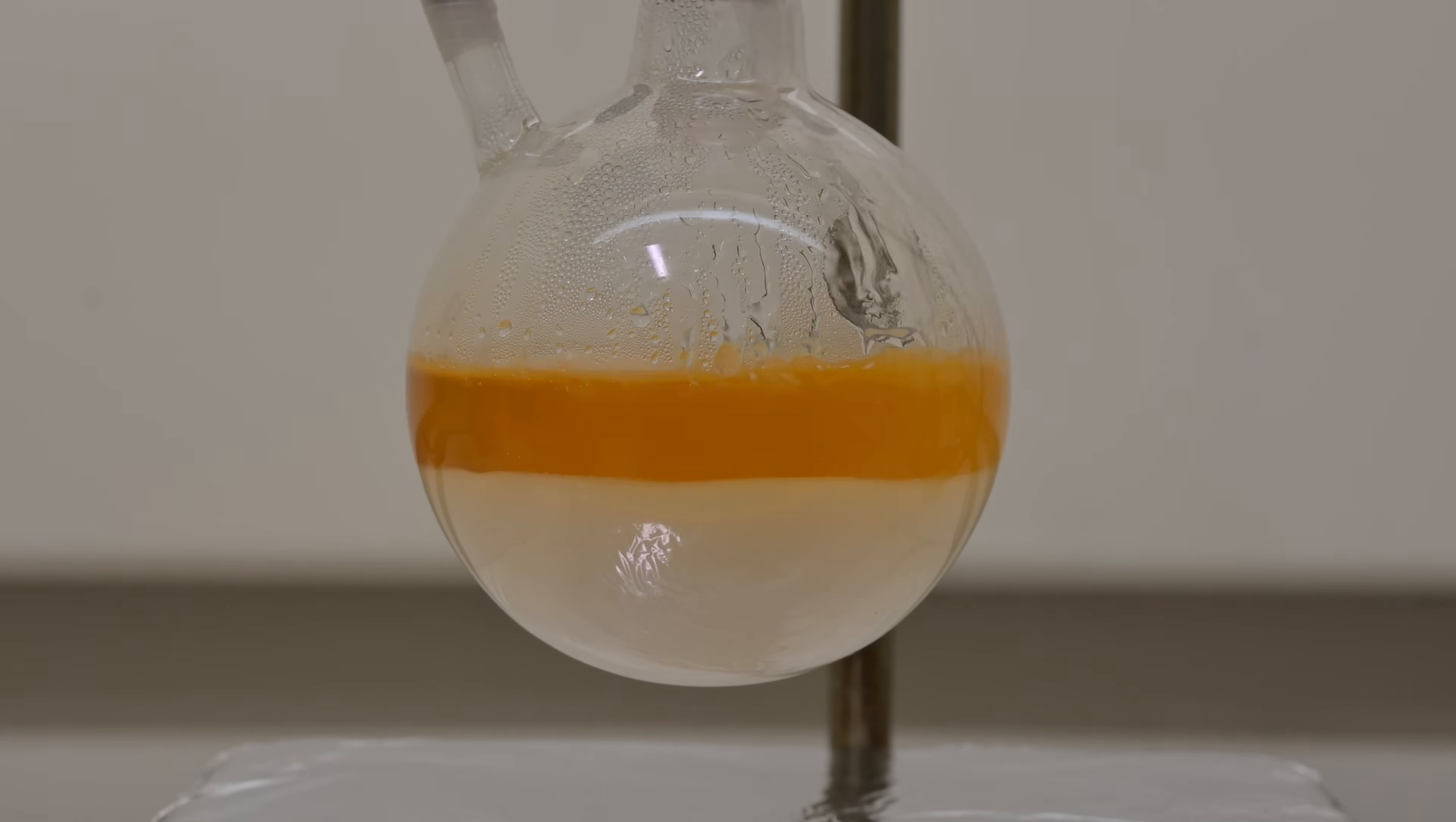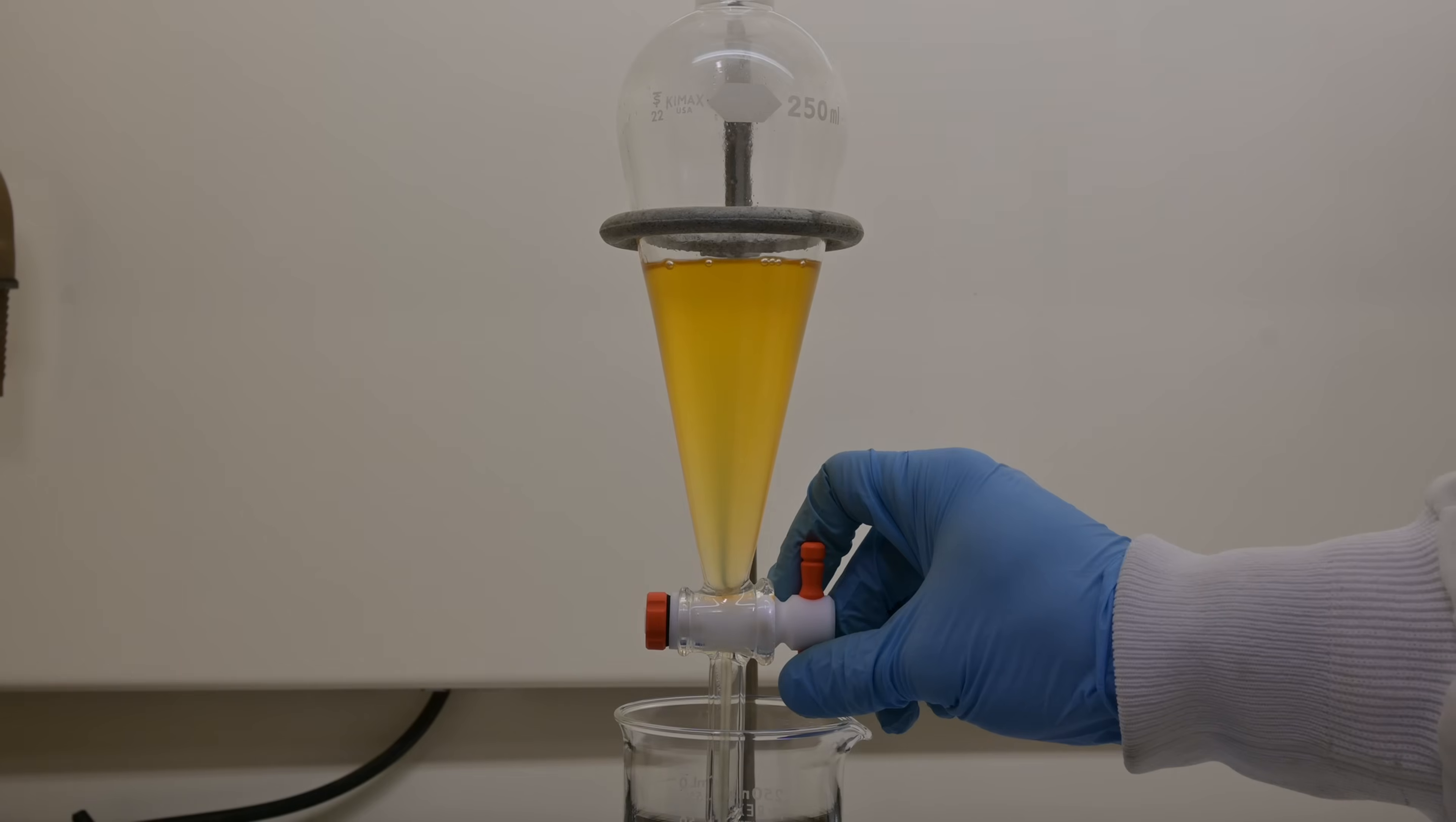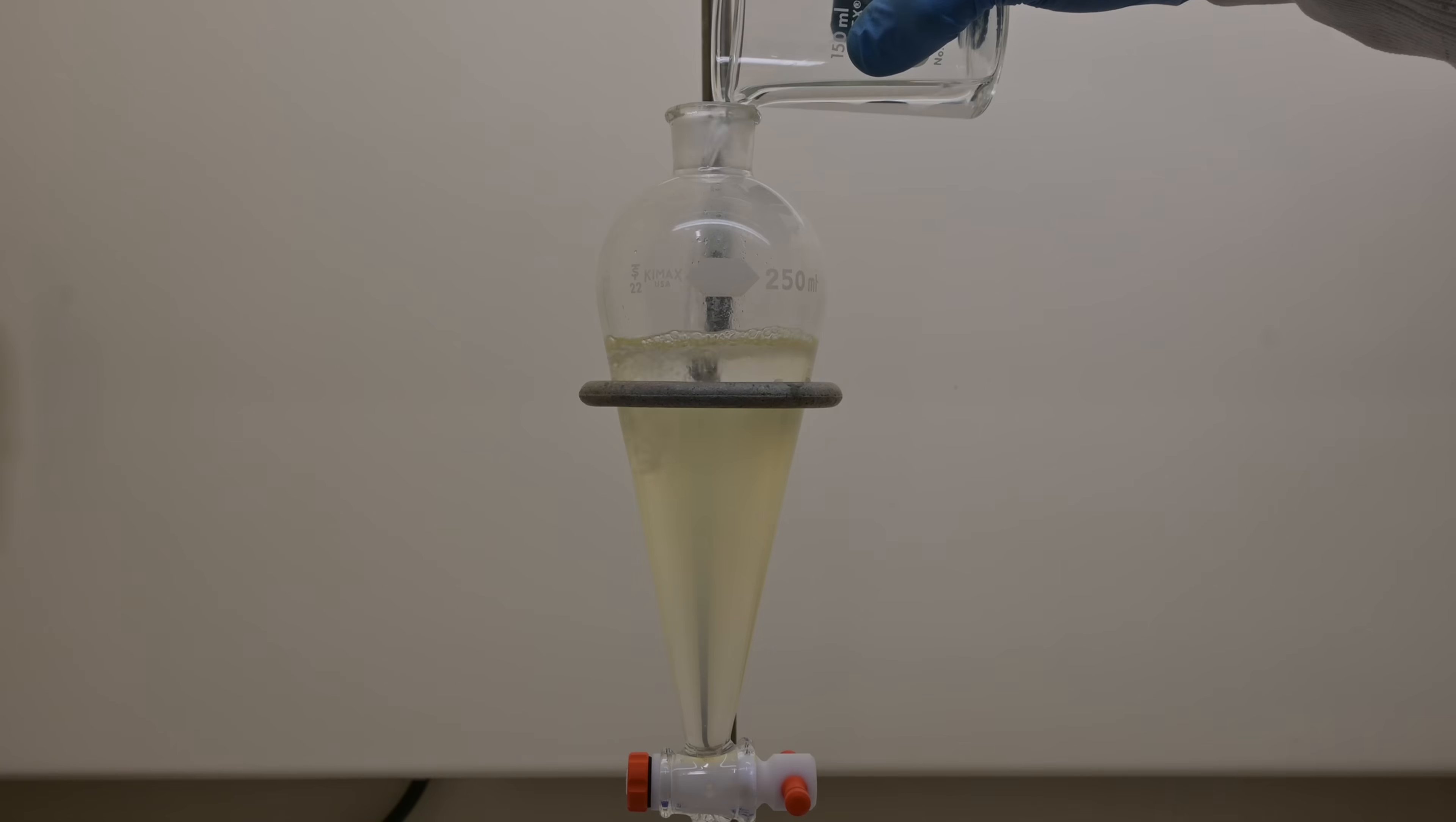Then I pour in about 50 milliliters of benzene and begin a liquid-liquid extraction. Benzene selectively pulls the organic diethylaminoethyl alcohol into its layer. I stir the mixture mechanically for about 5 minutes to ensure thorough mixing and good phase contact. I separate the benzene layer using a separatory funnel and repeat the extraction three more times, each with fresh 50 milliliter portions of benzene. This ensures that I've pulled out as much of the product that I can from the aqueous phase as possible.